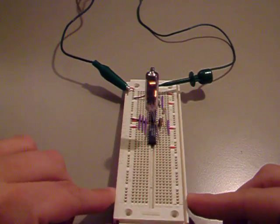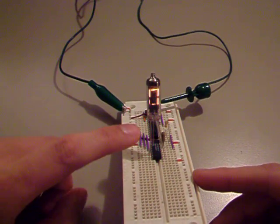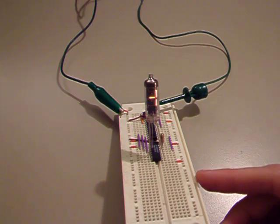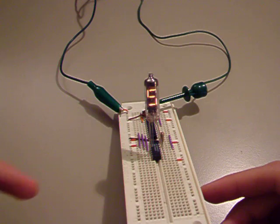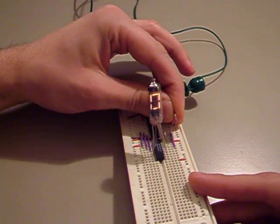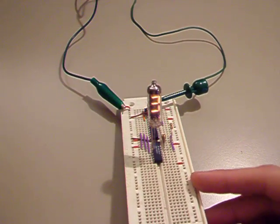This also makes it real easy for you to change the drive current. So it's like, well, that's a little too bright for me. Lower the resistance a little bit, and it gets a little bit dimmer. Or, I guess, raise the resistance and it gets dimmer.